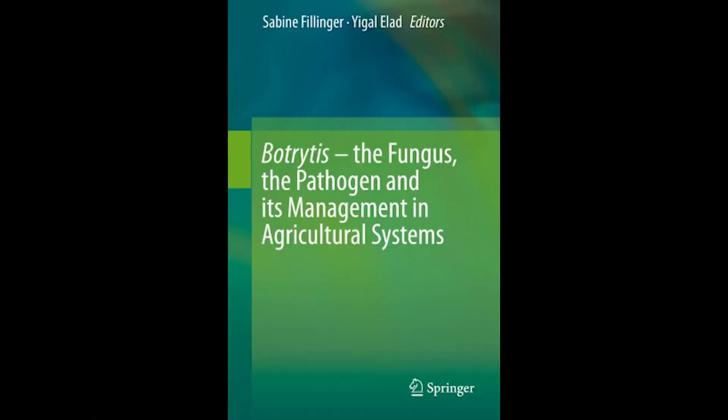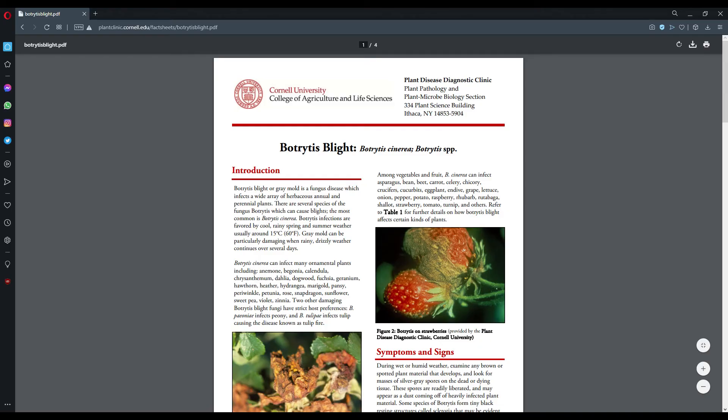There are many parts of the life cycle that remain unanswered. Figure 2.1 from the book Botrytis: The Fungus, the Pathogen, and its Management in Agricultural Systems is a great resource, and the primary book used for this video. There is also a good figure from the Plant Disease Diagnostic Clinic at Cornell — I'll link them in the description.